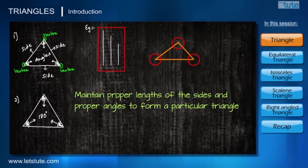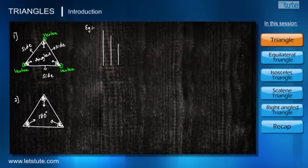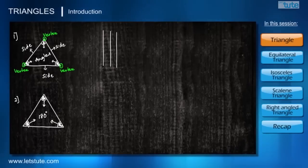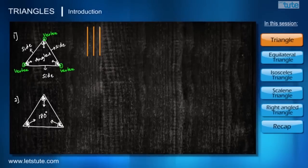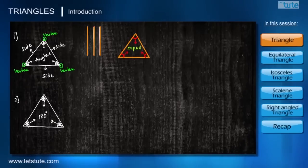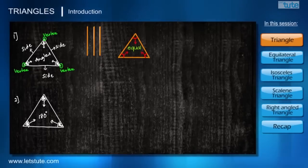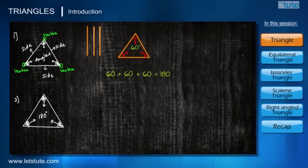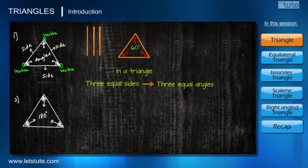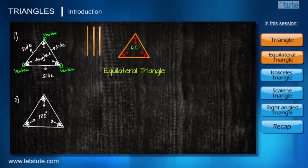Let's play with this property by taking different possibilities. Let me take three equal line segments and try to form a triangle. When these three equal line segments come together to form a triangle, they have to make three equal angles — then only a triangle is possible. Each angle has to be 60 degrees because the addition of all three angles is always 180 degrees. So whenever three sides are equal, the three angles formed will also be equal.